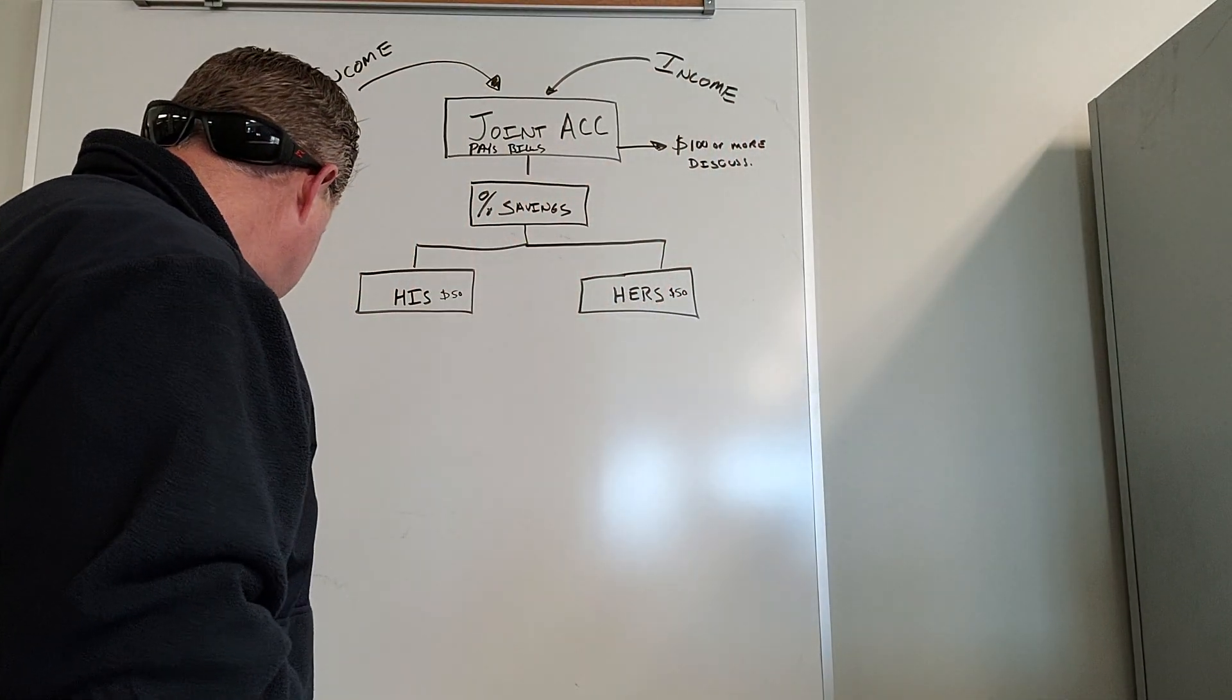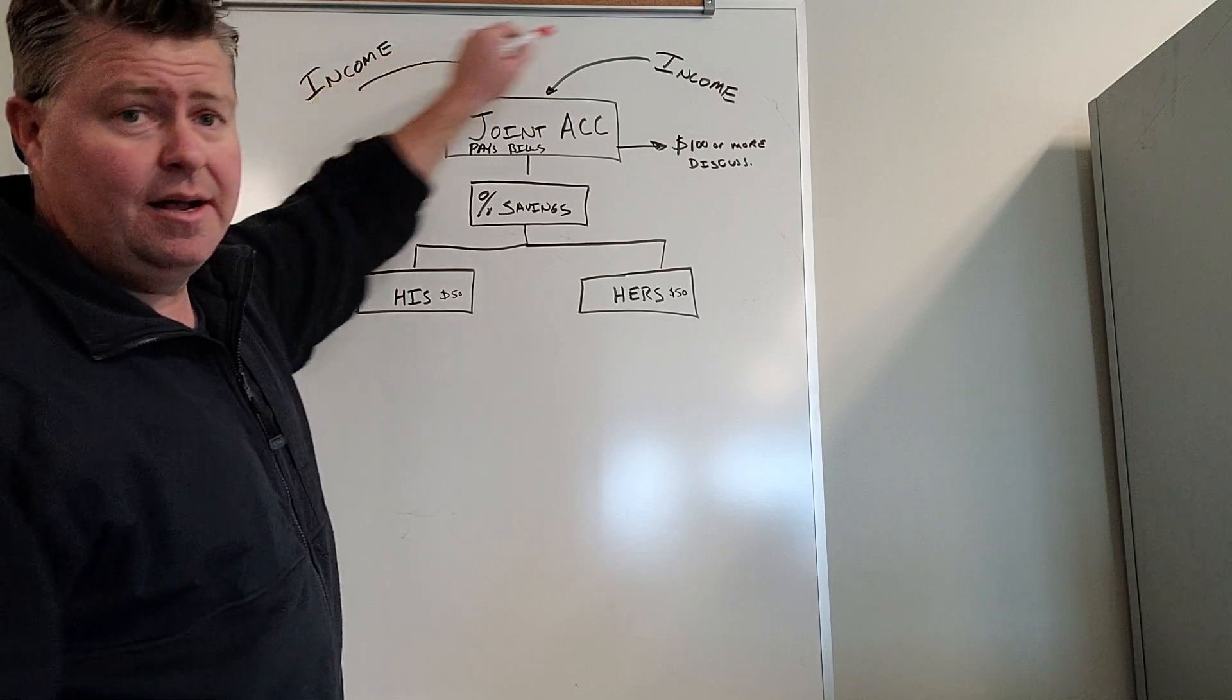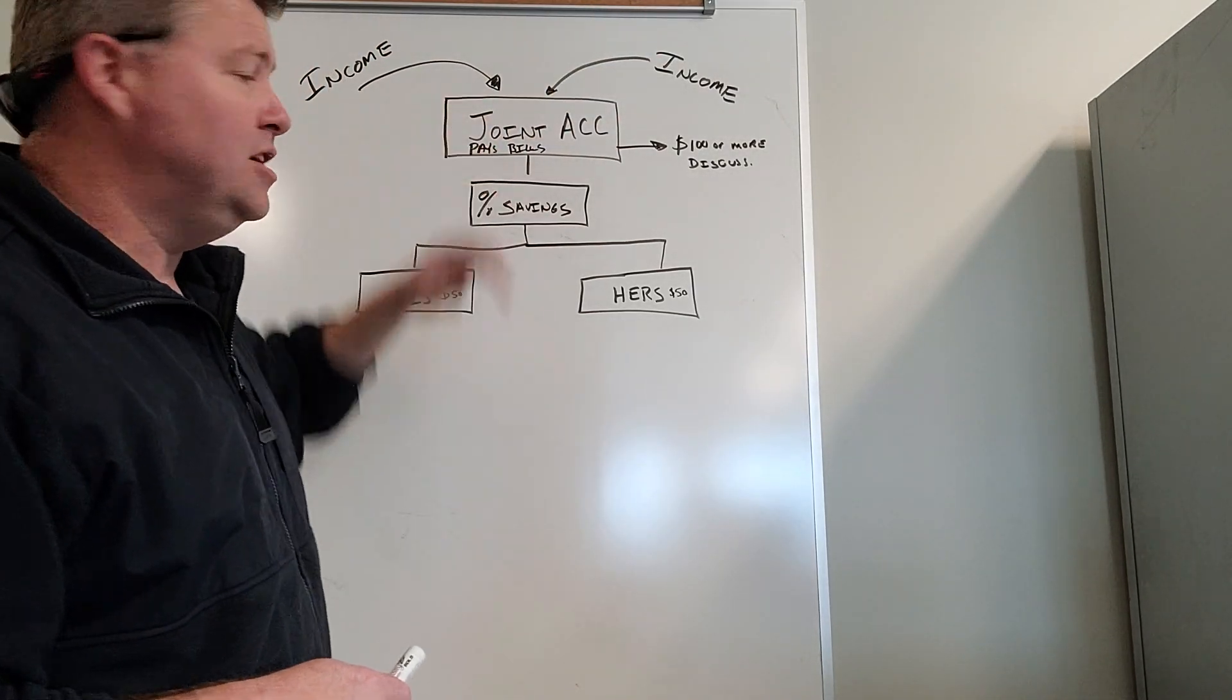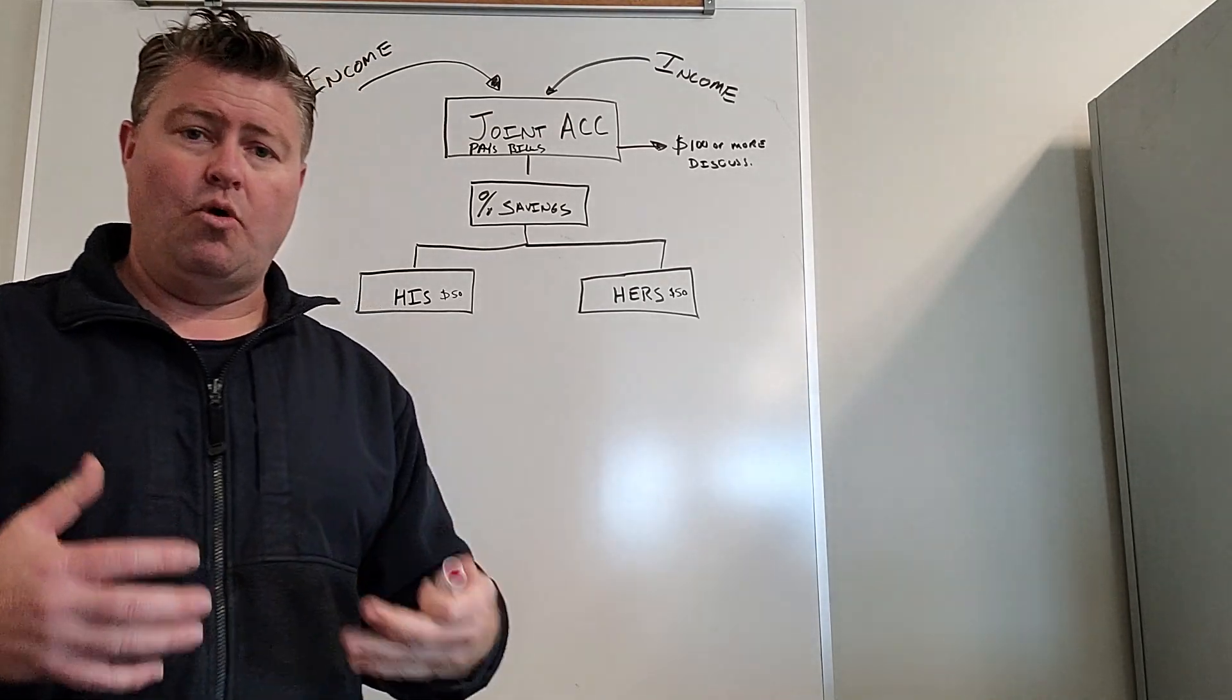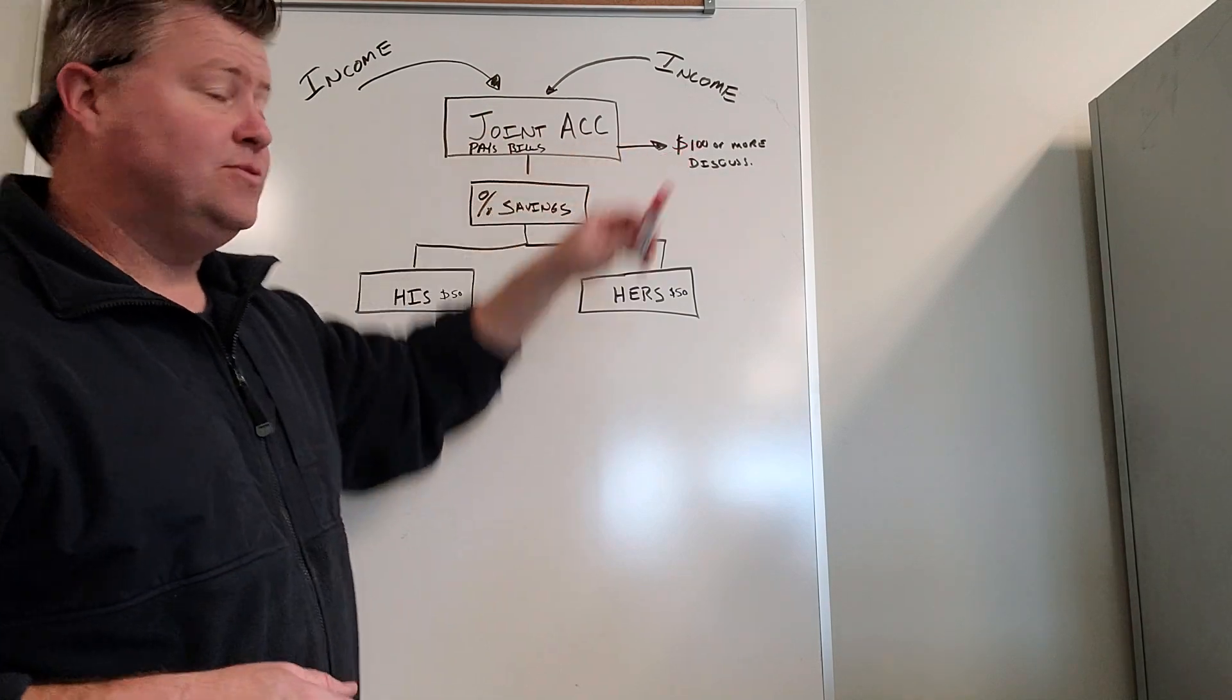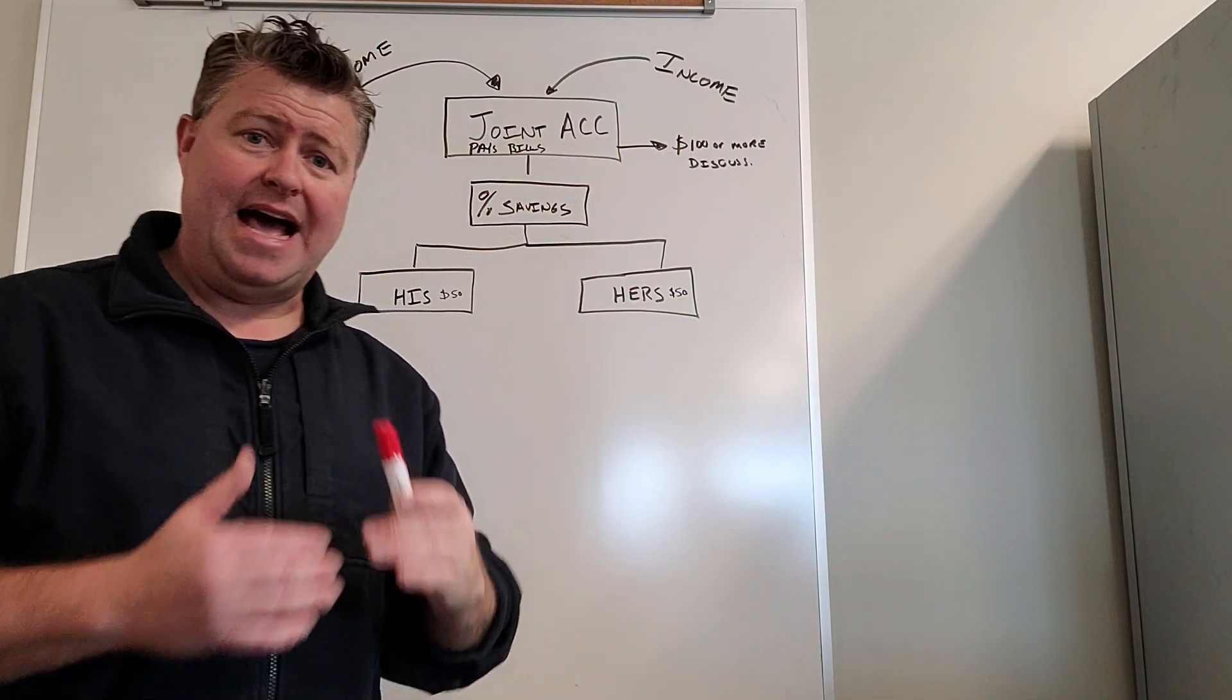So here we go. You have income from both sides, right? It's really important we found to have one joint account because we're more accountable to each other. So if they both go into one account, what we did is we actually wrote down a set of rules and we had a budget set up.